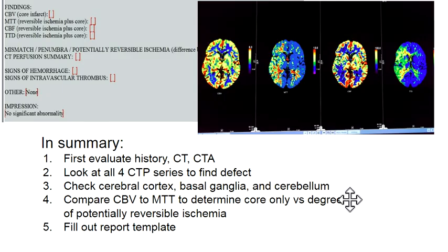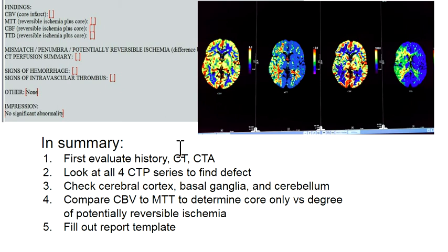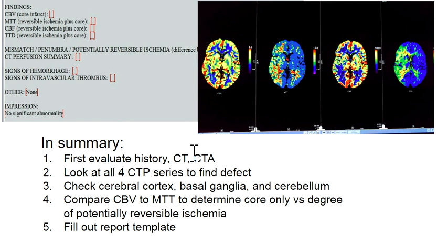In summary, when reading a CT perfusion head scan: first evaluate the history — find out which side the abnormality is, make sure it's not just a seizure, and if they have an old infarct evaluate that. Then look at the CT to make sure you're not dealing with a hematoma, tumor, or old infarcts. Then look at the CTA to find where the embolus is. You can quickly glance at the CT perfusion TTD before reading the CTA to know where to look hard — you might find tiny branch occlusions you'd otherwise miss.